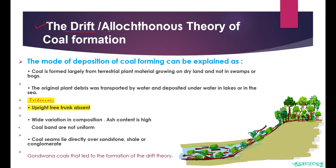The second theory is the drift theory, also known as the allochthonous theory. As the name suggests, drift means transportation — the source or origin and the deposition are at different places. According to this theory, coal is formed largely from terrestrial plant material growing on dry land, which is different from the in-situ theory where plants grew in the swampy area and were deposited at the same place.